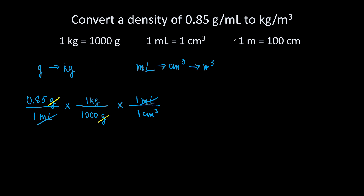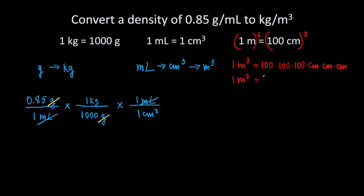1 meter is 100 centimeters. We need cubic units, so we will cube both sides. 1 cubic meter equals 100 cubed, which means 100 times 100 times 100 — the same with units. 1 cubic meter is equal to 1 million cubic centimeters.